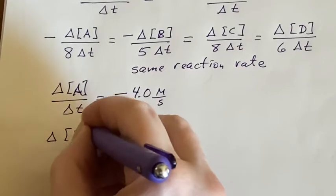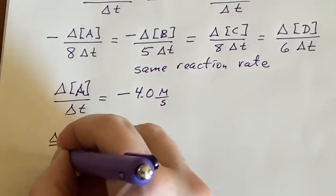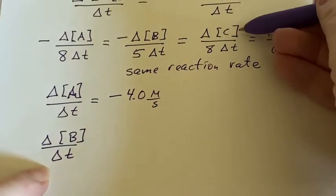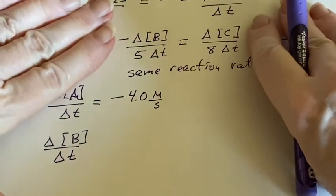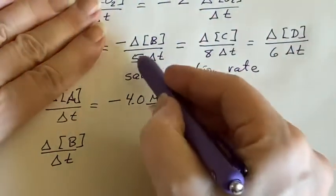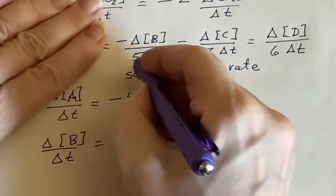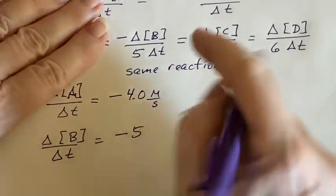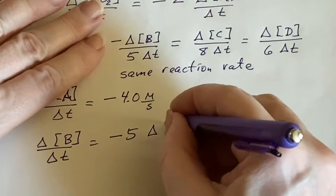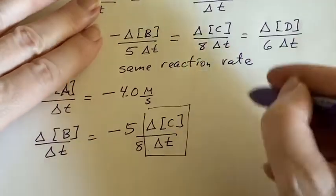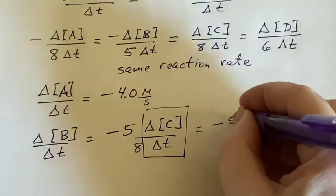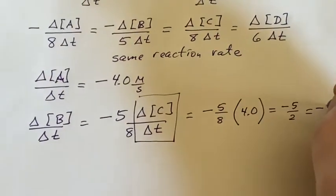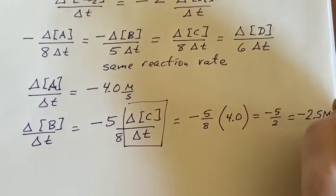The change in the concentration of B compared to T. We need to get this in terms of C. I can just block both of these out and say, this needs to have a negative sign. And instead of the 5 being here, it should be up here. And then I'll write down what this one was. This is what I was given. So I can just say minus 5 eighths times 4.0. Minus 2.5 molarity per second.